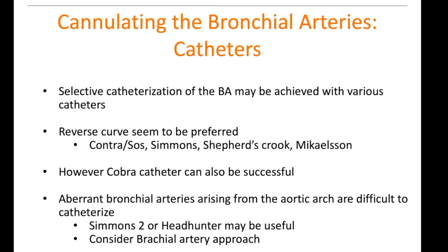Once you get your image done and can see the bronchial arteries, selective catheterization is performed. If you can't see them but know exactly where they should be, you give it a try, because we know 70% of the right comes off the intercostal bronchial trunk. Various catheters can be used, but a reverse curve seems to be preferred, especially for the right.